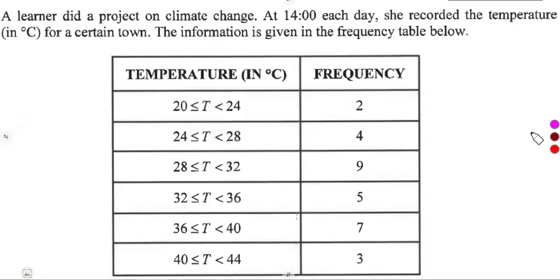From the given question, we are given that Elena did a project on climate change at 1400 hours each day. She recorded the temperature in degrees Celsius for a certain town. The information is given in the frequency table below. As we can see from the information, we are given this in terms of class intervals. That is, we are dealing with grouped data or grouped information.